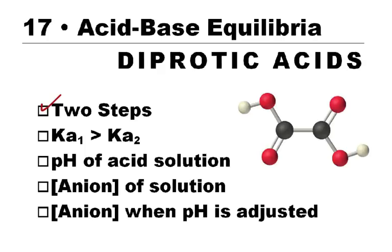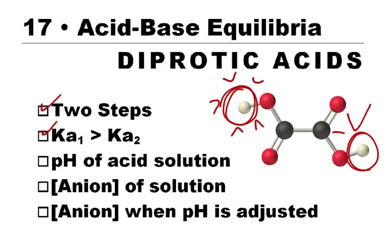One of the things about diprotic acids is that they dissociate in two steps. In this case here, this hydrogen comes off in one step, and the other hydrogen comes off in another step. Now because we have two steps, there are going to be two different Ka's, and we're going to find out that the first Ka is always larger than the second Ka. So it's going to be a certain amount of energy to pull off that first one, and then to pull off the second one is always more difficult.